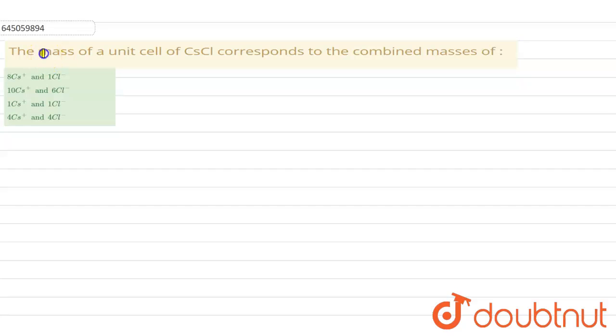have to explain the mass of unit cell of cesium chloride corresponds to the combined mass of which ions. First of all, we know that cesium chloride has the BCC structure, that is body centered cubic unit cell.